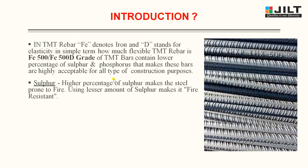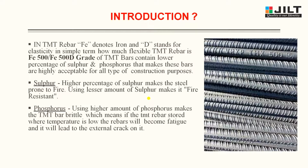A few elements are present in steel — mainly sulfur and phosphorus. A higher percentage of sulfur makes the steel prone to fire, while using a lesser amount of sulfur makes it fire resistant. Using a higher amount of phosphorus makes the TMT bar brittle, meaning if stored at low temperature the bar becomes fatty and leads to external cracks. So it has the property of brittleness.